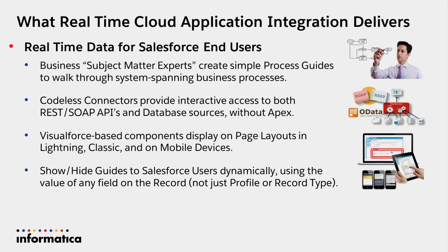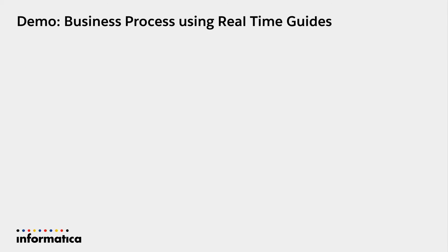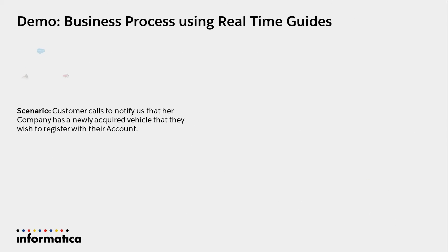What I want to walk through are process guides and the codeless connectors that give you interactive access to REST and SOAP-based APIs and database sources without Apex. These are Visualforce-based components that display on page layouts in Lightning, Classic, and mobile devices. They can be shown and hidden to Salesforce users using any field value on the record. It's a different way to think about displaying external data with a certain amount of control — all the metadata for these processes is stored in Informatica Cloud.